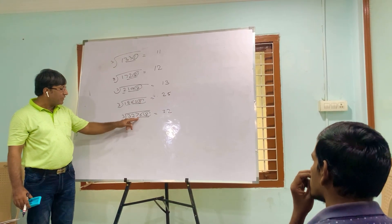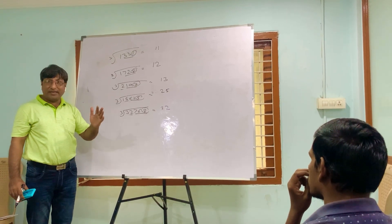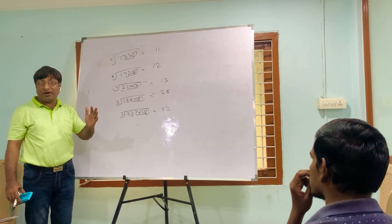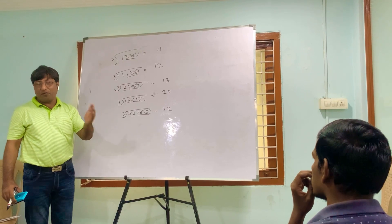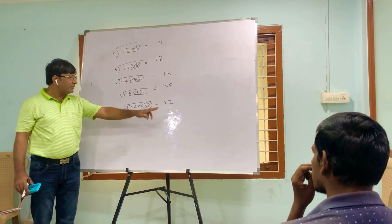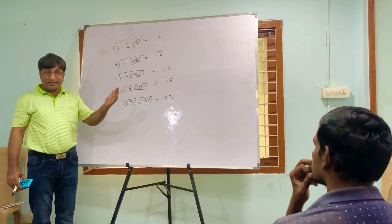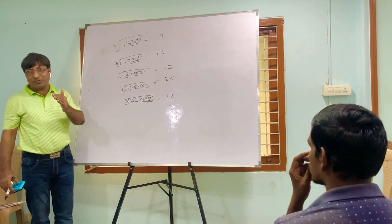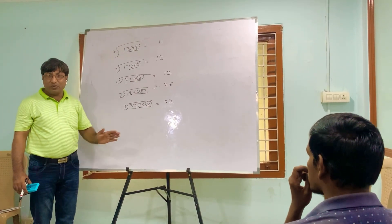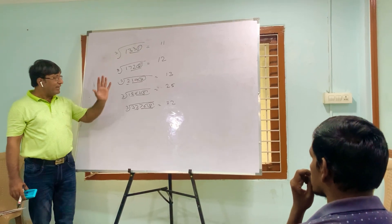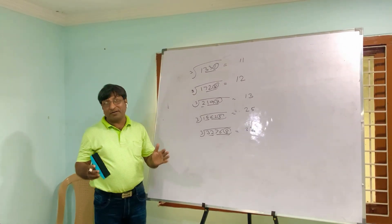For 32768: group of 3 digits is 768, unit 8. Multiply 8 three times: 8 × 8 = 64, unit 4; 4 × 8 = 32, unit 2. Write 2. Left number is 32: 3³ = 27, 4³ = 64 which is greater, so take 3. The cube root is 32. In this way you can find the cube root of any large number. Thank you.